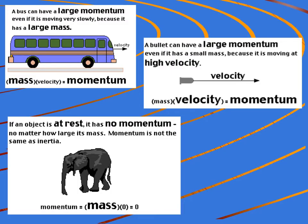A couple examples. First of all, objects that are slow moving can still have a great amount of momentum. For example, a large bus. It has a huge mass, and even if it's moving slowly, it'll still give you a big number for momentum.